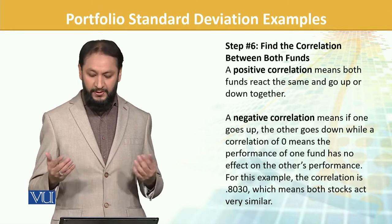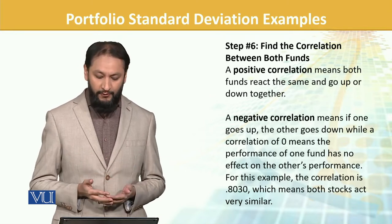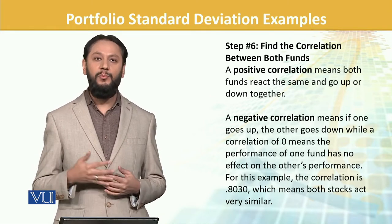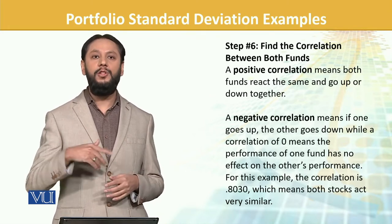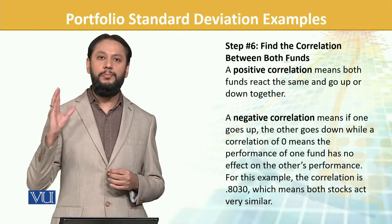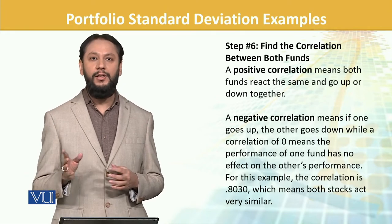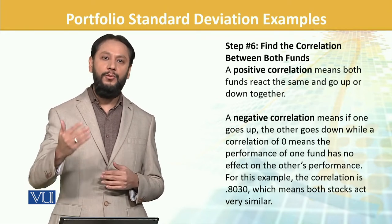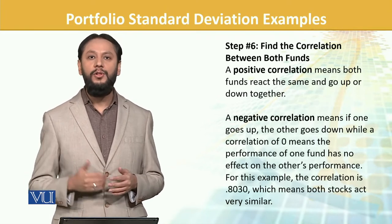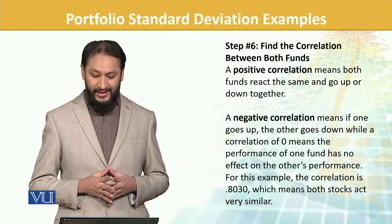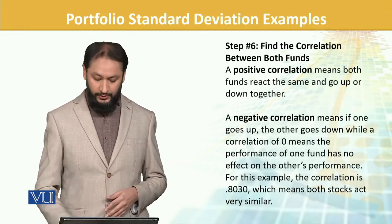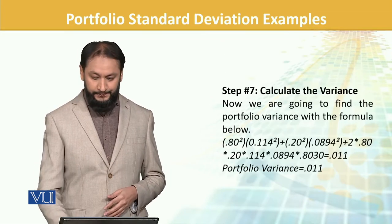That means the linkage between them is very similar. If it were close to 1, it would be perfectly correlated. 0.8 is close to 1, so that means a high similar correlation factor.